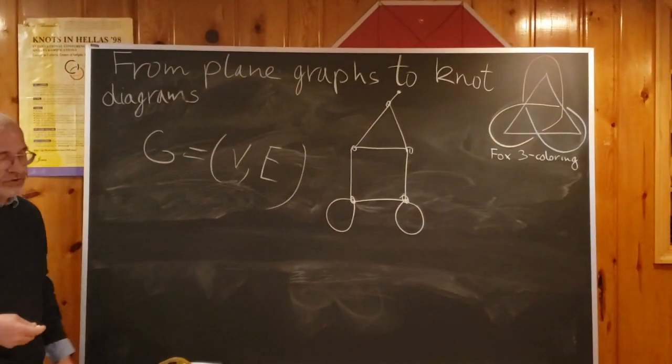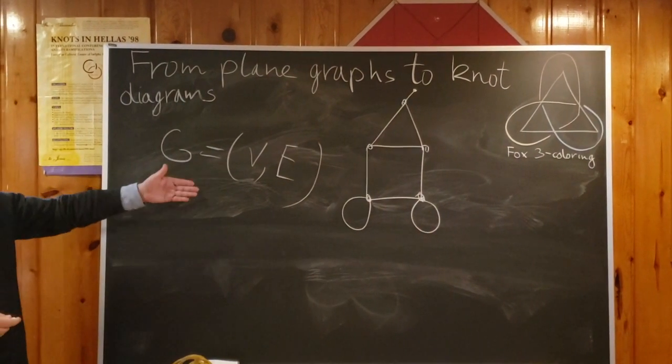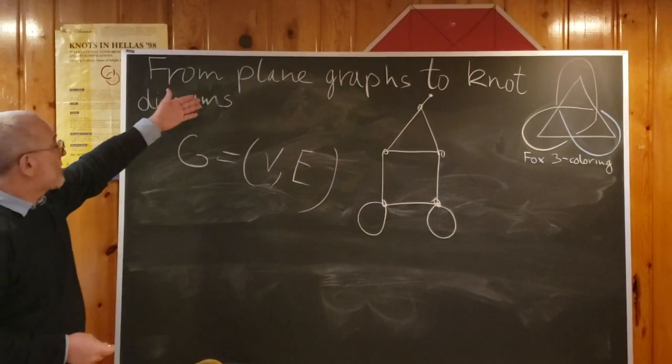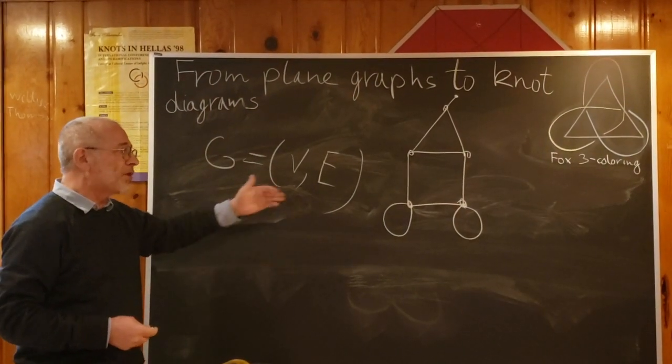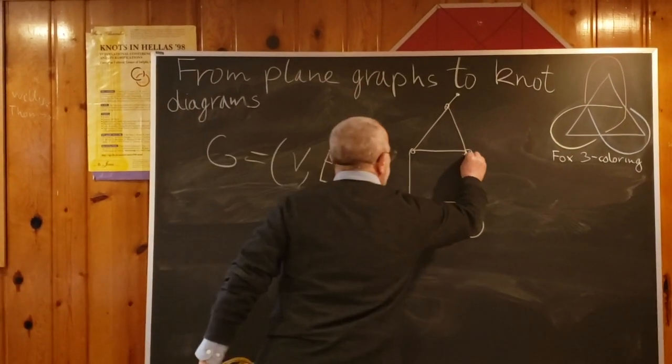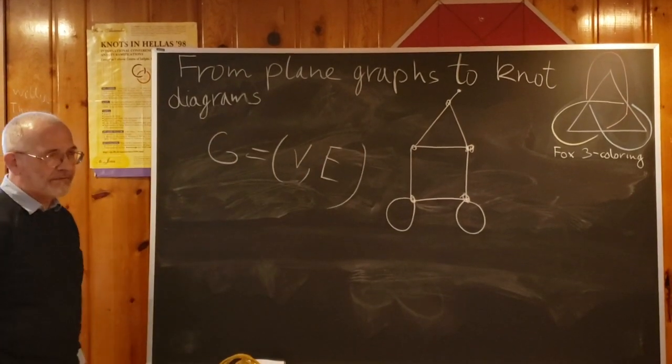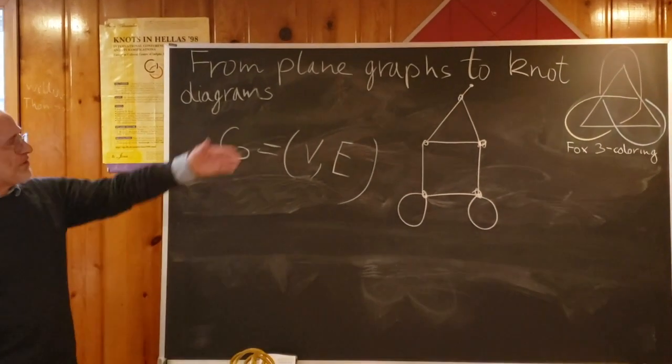A graph abstractly is not necessarily drawn this way, but today we start from plane graphs. A plane graph is already a graph drawn on the plane, so this is a good example of a plane graph.